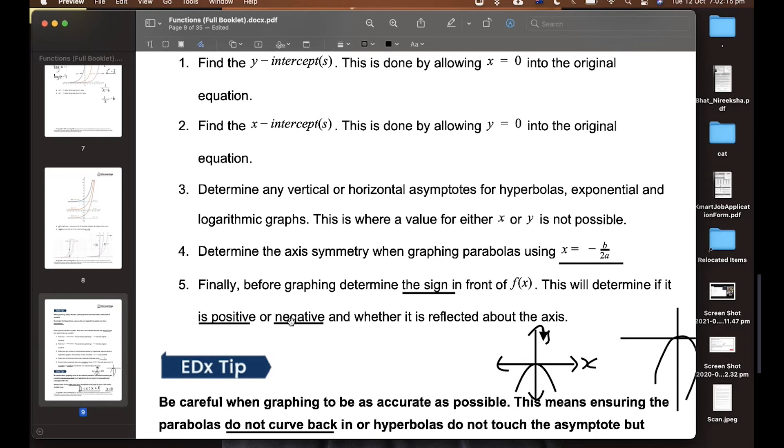Which one of these is concave up and concave down? Elisa, do you want to remind us? Negative is concave down and positive is concave up. Perfect. Negative is concave down and positive is concave up. Very good.